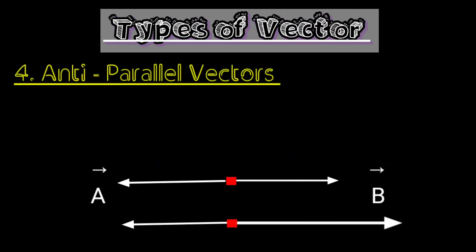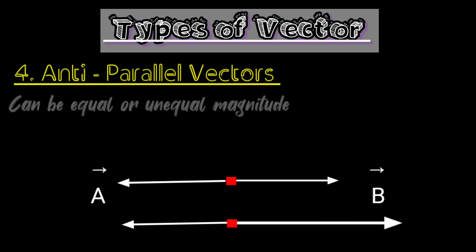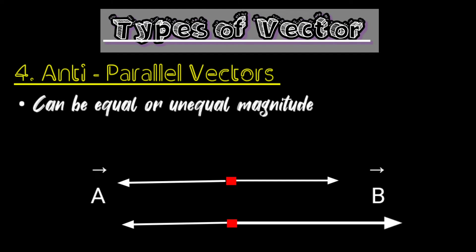Anti-parallel vectors: two or more vectors which have equal or unequal magnitude but having opposite direction are called anti-parallel vectors.